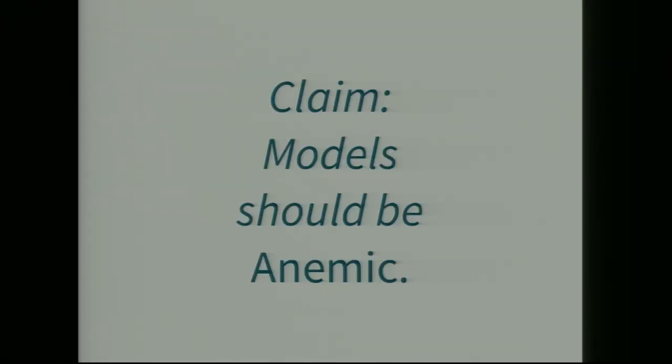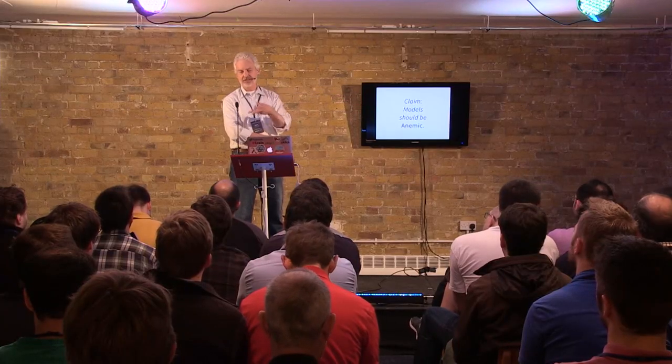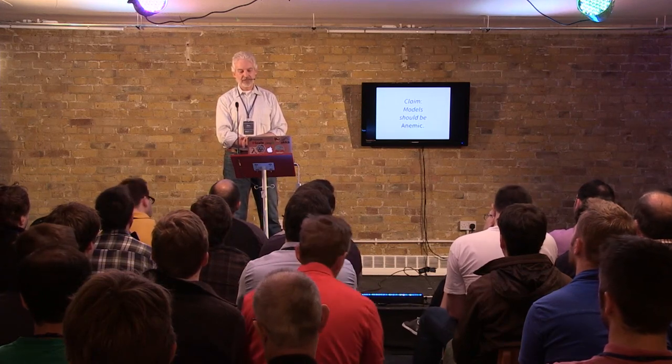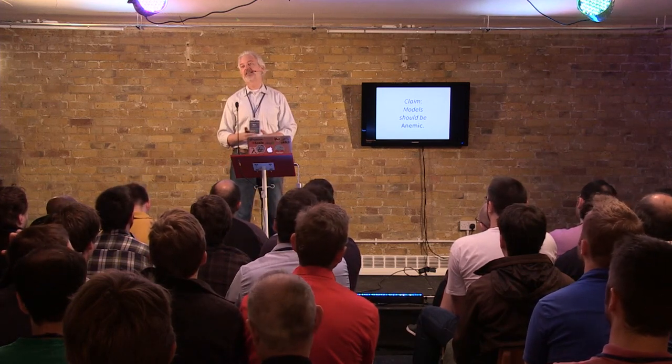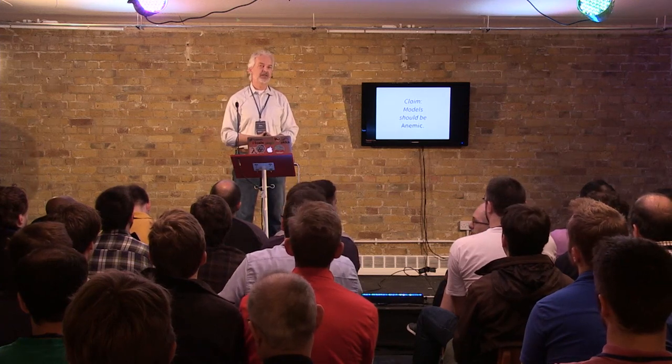There's an anti-pattern in DDD called the anemic domain model — the idea being you don't want objects that are basically just state with external functions manipulating that state. This is considered a bad thing in DDD. But I'm going to claim that models actually should be anemic. When we get to functional programming, I'll argue that separating state and behavior actually gives you better flexibility in how you manipulate things.